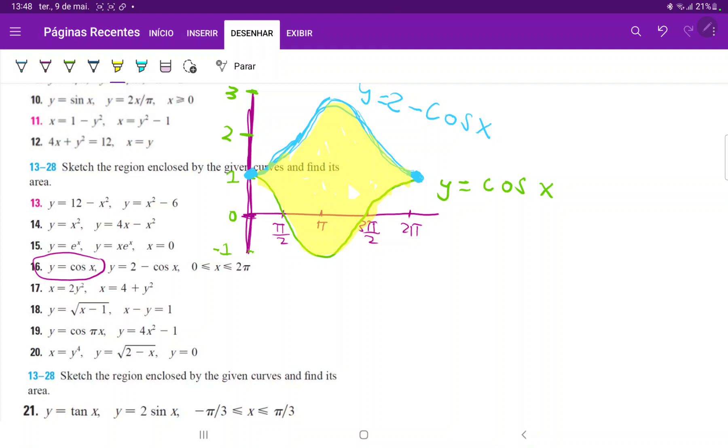we do have our boundaries of integration, and we do consistently have the same function as the upper boundary, which is 2 minus cosine of x, and the same function for the lower boundary, which is cosine of x. So we can go ahead and set that up as a single integral.